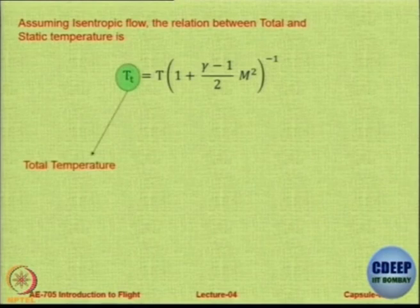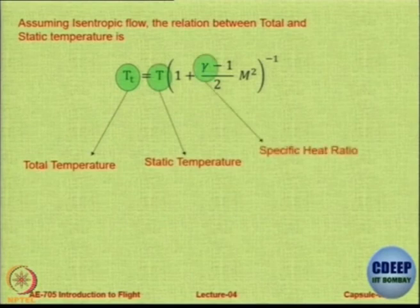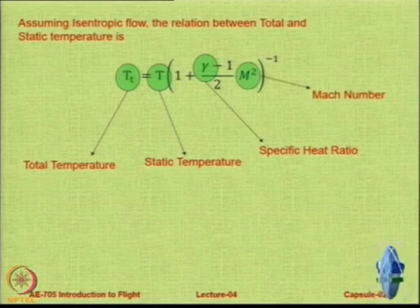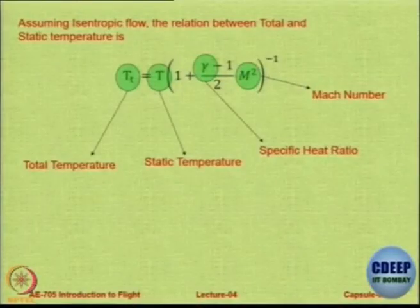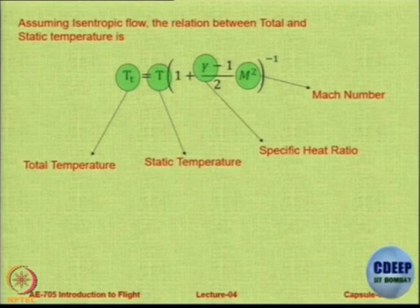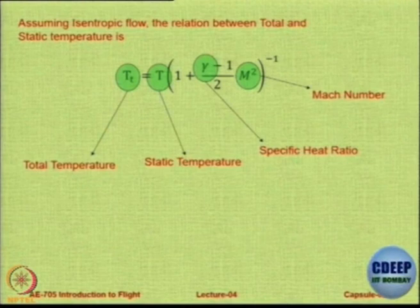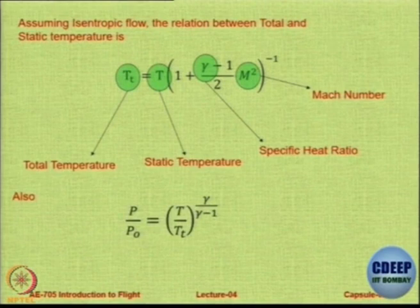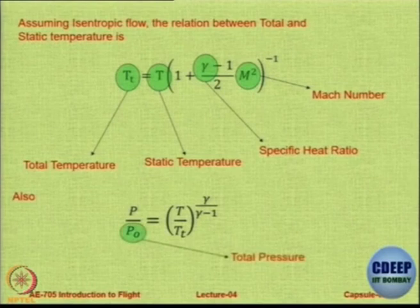It is sufficient for now to assume that the total temperature T naught is going to be static temperature plus a term depending on the specific heat and the Mach number. This will tell you that as the Mach number increases there is going to be an increasing temperature effect. A student points out an error — the minus one should not be there in the formula. Thanks for pointing it out. From this you can get P over P naught as a ratio of temperatures raised to gamma over gamma minus 1. That is the total pressure. We come to an end of today's class.